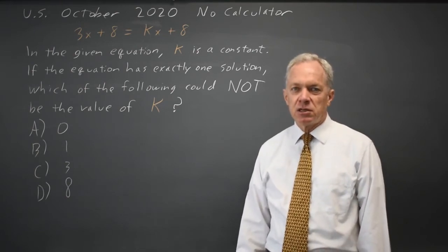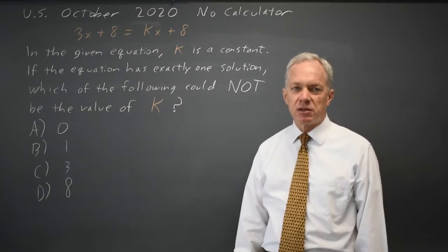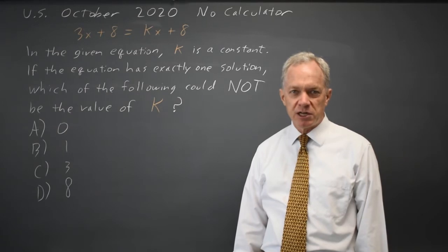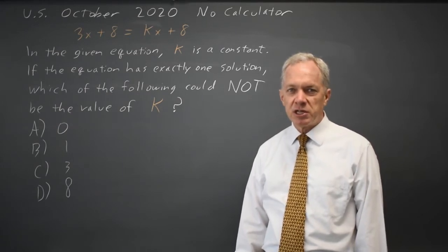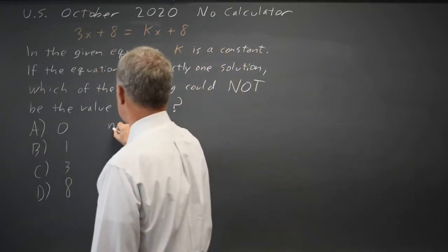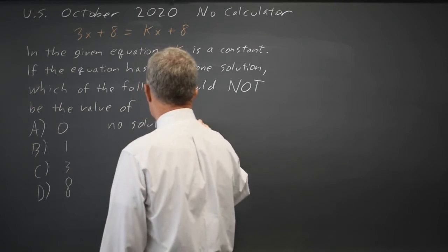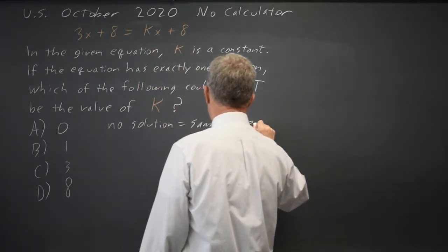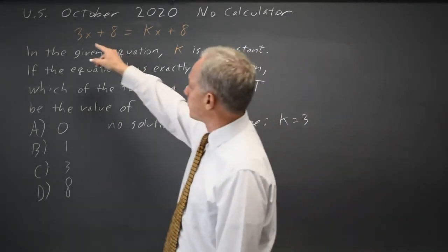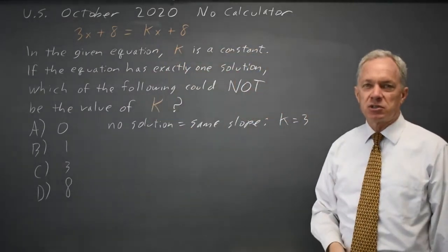Two ways to look at this. If you have a linear equation that does not have exactly one solution, it either has zero solutions or infinitely many solutions, and zero or infinitely many solutions mean the two sides will have the same slope. Which means k equals 3, because the slope of 3x plus 8 is 3, the slope of kx plus 8 is k, so k equals 3.